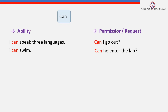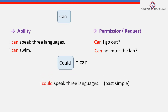Now we move to the next modal, which is 'could.' Could actually has the same function as 'can.' There is only a slight difference: 'can' is in the present, but 'could' is in the past. So in the past: 'I could speak three languages,' or 'I could swim.'